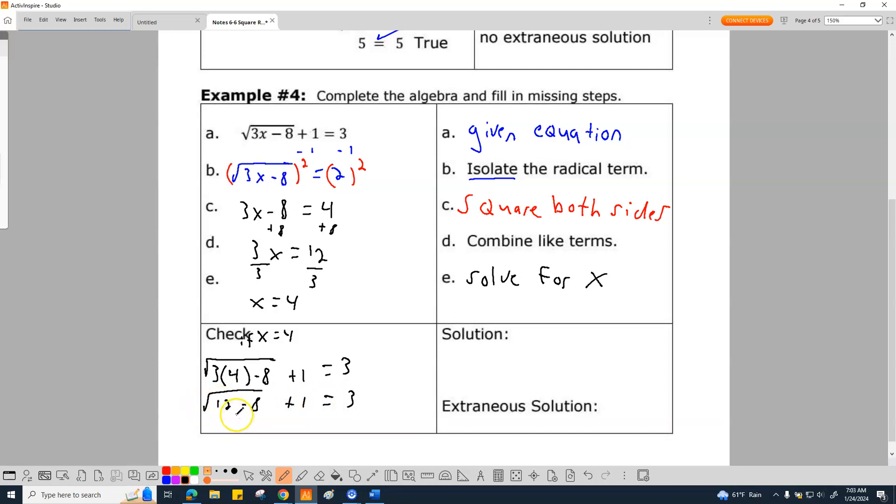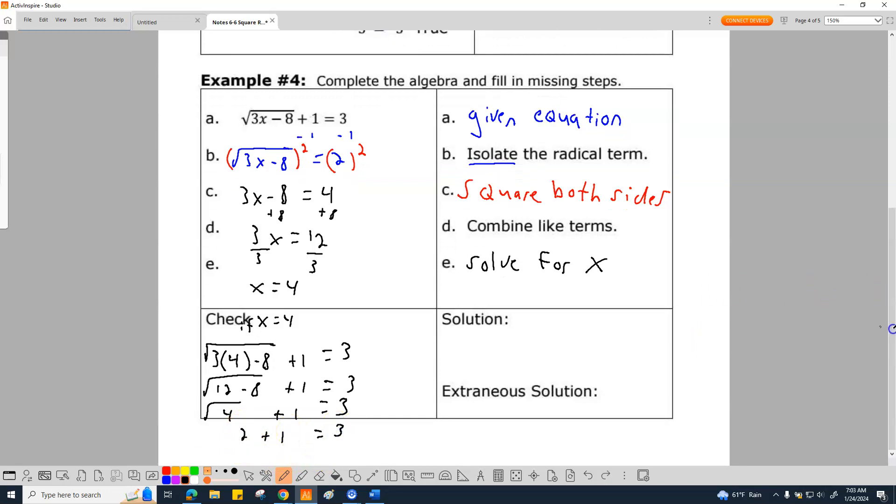All right. Let's look at this right here. Twelve minus eight is four. Square root of four plus one equal to three. Square root of four is two plus one equal to three. Add the two and one together. Two plus one is three equals three. Is three equal three true? Yes, it is. I almost wrote turd. True. Solution. X equals four. That's how we do all that.